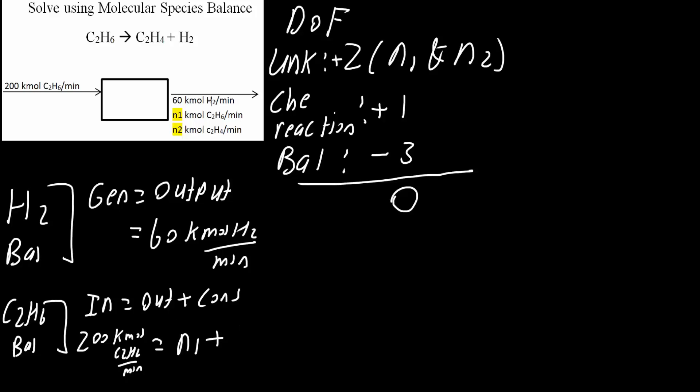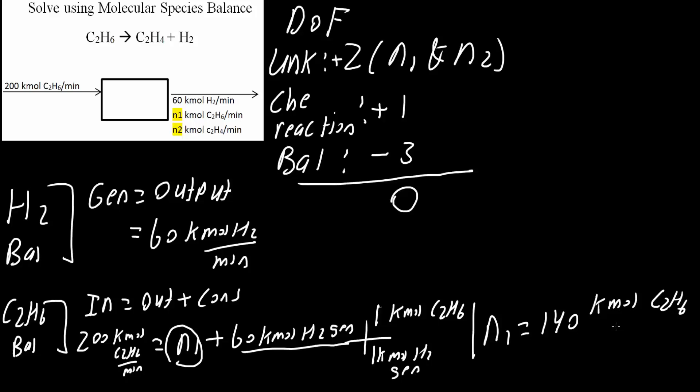Now this is where the 60 comes into play. We have 60 kilomoles of H2 being generated. We know that 1 kilomole of H2 being generated would only occur if you consume 1 kilomole of C2H6. So we'll write 1 kilomole of C2H6. By doing this, we can easily get N1. This would be 60. 200 minus 60 gives us N1 equals 140 kilomoles of C2H6 per minute. This is our first answer, and now we just need to get N2.